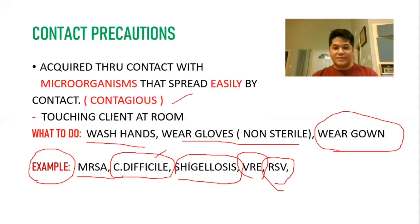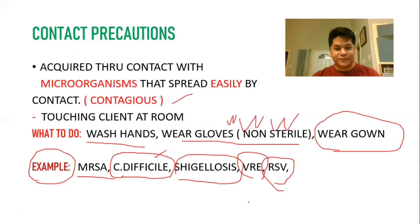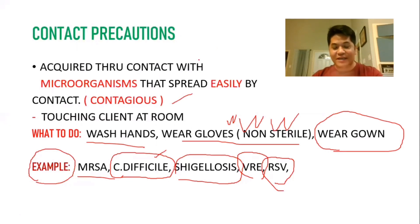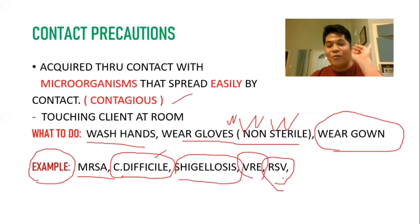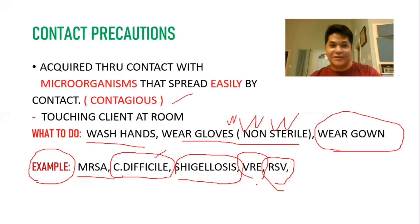For contact precautions, remember three W's: wash hands, wear gloves (non-sterile), and wear gown. So that's W, W, W — wash hands, wear gloves, and wear gown — for contact precautions.